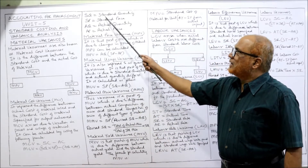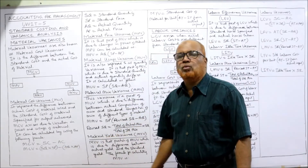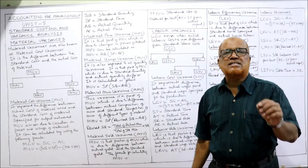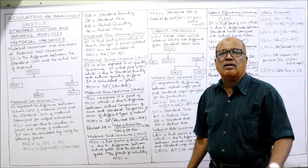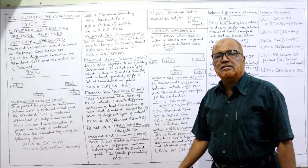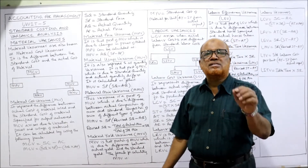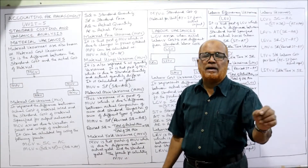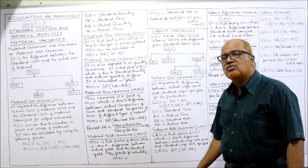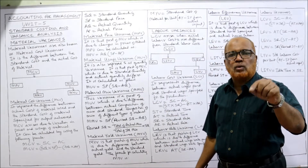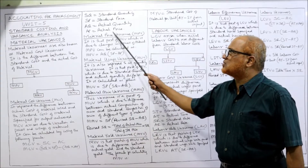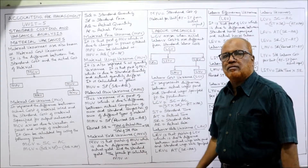SQ stands for standard quantity, SP stands for standard price, AQ stands for actual quantity, and AP stands for actual price.